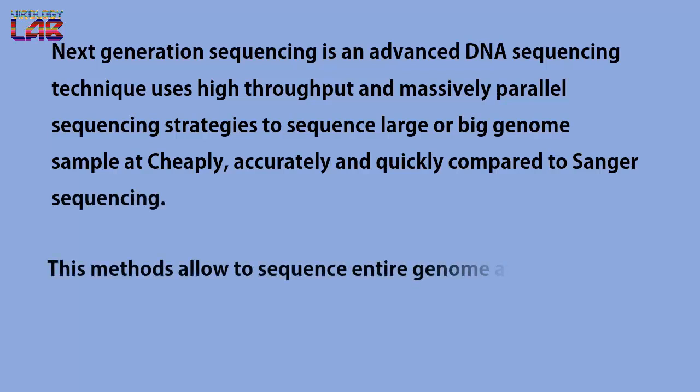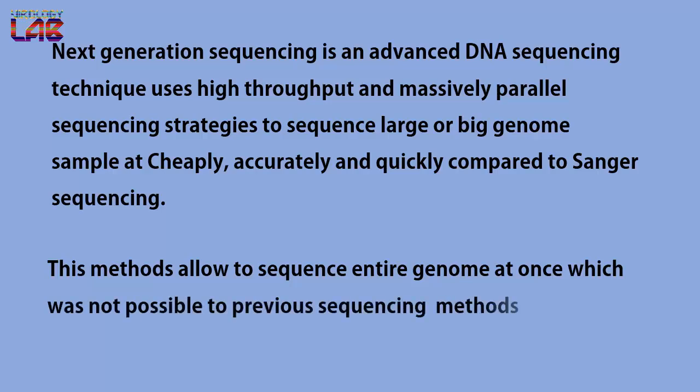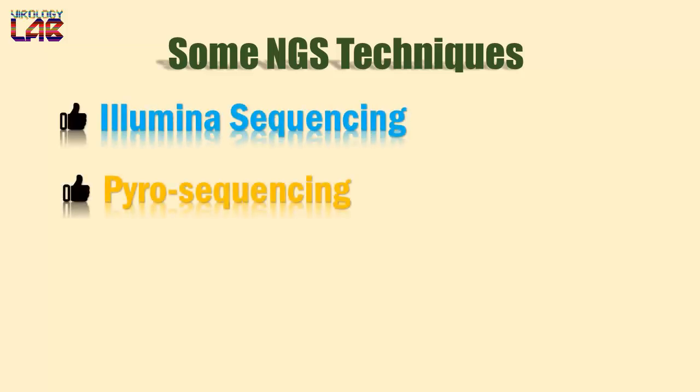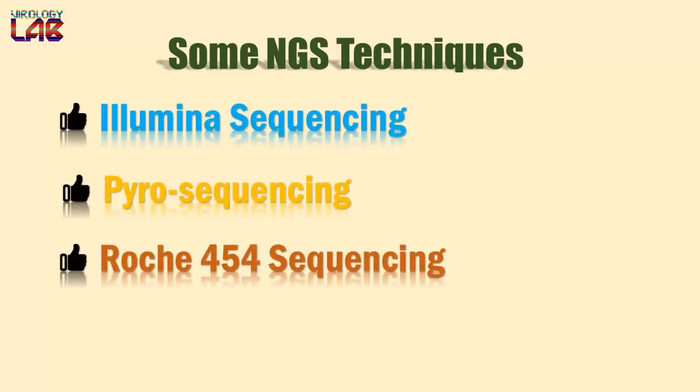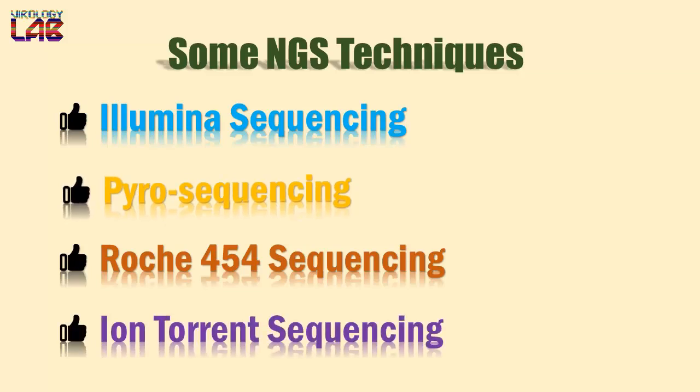These methods allow sequencing entire genomes at once, which was not possible with previous sequencing methods. There are a variety of NGS methods available. Among them, the most popular methods are Illumina sequencing, Roche 454 sequencing, which is similar to pyrosequencing, and Ion Torrent sequencing.